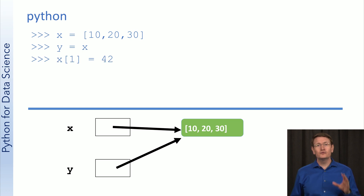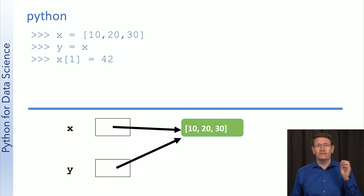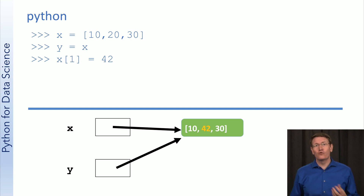Here's where things get interesting. By saying x at index 1 is 42, we are going to change the list in memory. Remember that lists are mutable, so this change will have an effect like this. The list at index 1 is now changed to the value 42.